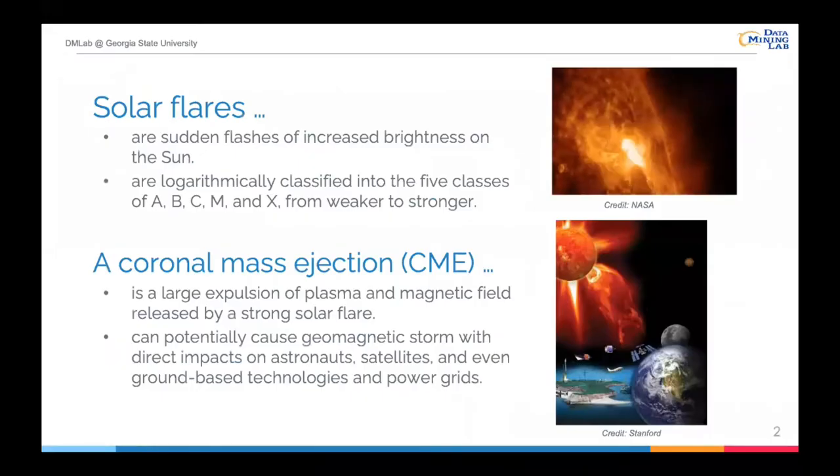To begin with, I'd like to provide some background information regarding the solar flare. Solar flares are sudden flashes of increased brightness on the sun. An example of solar flare is depicted on the right hand. Solar flares are logarithmically classified into five classes of A, B, C, M, and X, from weaker to stronger.